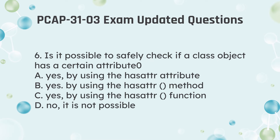Question 6: Is it possible to safely check if a class object has a certain attribute? a. Yes, by using the hasattr attribute. b. Yes, by using the hasattr method. c. Yes, by using the hasattr function. d. No, it is not possible.